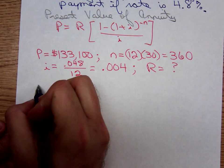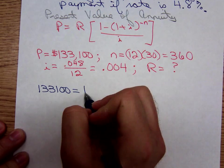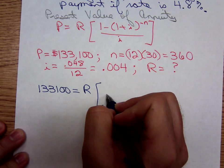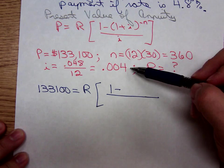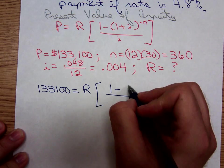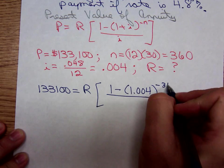We have $133,100 equals R times [1 - (1.004)^-360] / 0.004.